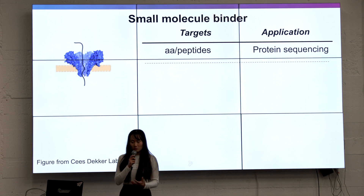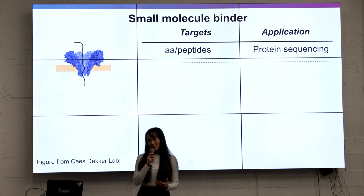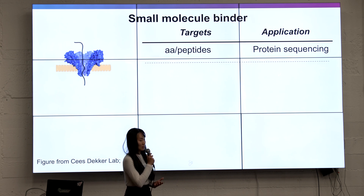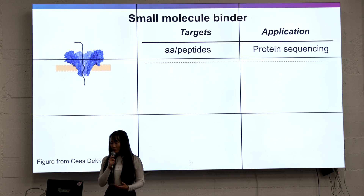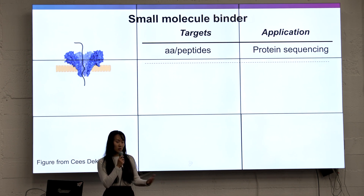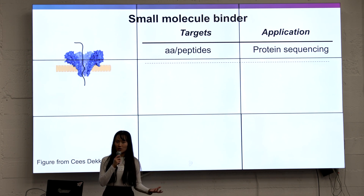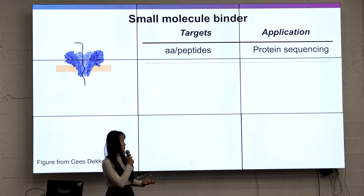So first of all, why are we doing small molecule binding? This is not really something we talked about over the past day, because everyone is doing DNA and small machines. If you already have the interaction there, which is already validated, you can change the affinity, change the kinetics, and the application would be pretty obvious.